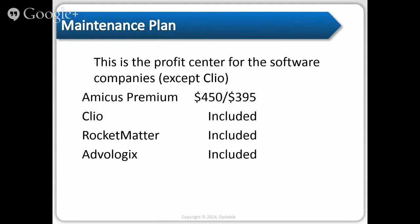For cloud-based software like Clio, Rocket Matter, Avalogix, and MyCase, there is no maintenance plan — you're just paying that one fixed cost. If you're starting out and buying five users of Clio, that's five times $65 a month. If you're buying five users of Amicus, you have to have that cash on hand upfront, and that's going to be a lot more. So the subscription model is somewhat helpful for people just starting off.